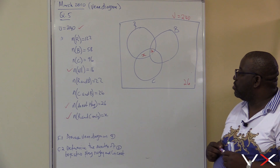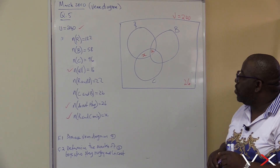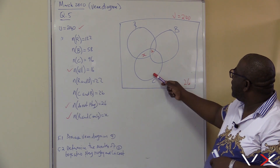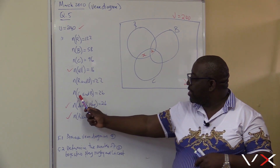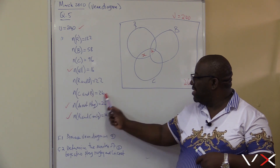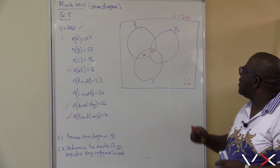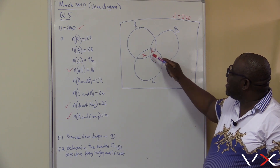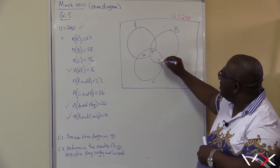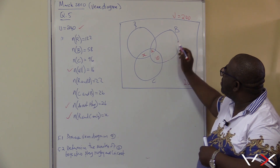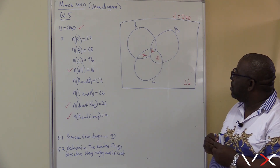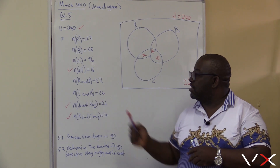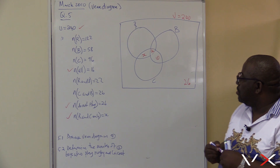Let's go on with those that play two sports. Cricket and basketball: what is the total for cricket and basketball? It is 26. We already have 16 in the all-three intersection, so we're short of 10. All together in cricket and basketball, it's 26. We're given the intersection for cricket and basketball, so that's done.